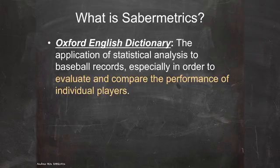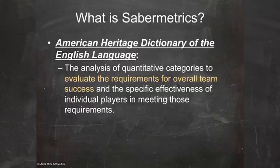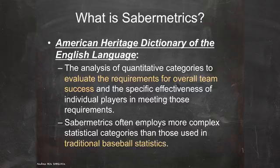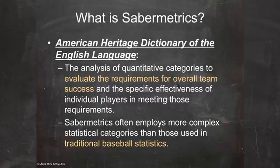The OED keeps the 'statistical analysis of baseball records' piece, then adds that sabermetrics is about evaluating players. When we look at the American Heritage Dictionary version, they talk about team evaluation for team success, rather than just players or baseball records. The American Heritage Dictionary also adds a clause about how these new statistical categories are more complex than traditional baseball statistics. So there are subtle differences between each of these definitions.